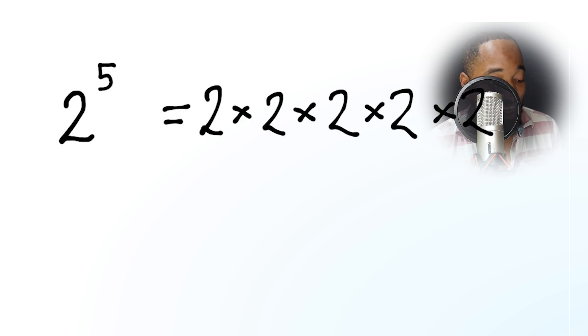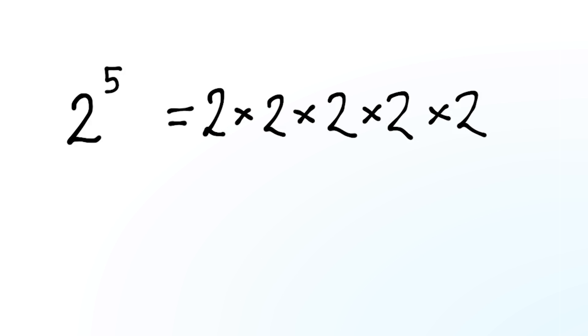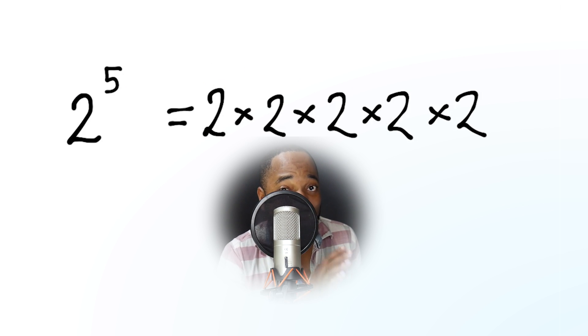You should recall that if you have a number like 2 to the power of 5 and you want to express that out, expand that, that means 2 multiplied by itself 5 times: one, two, three, four, five. So that's how it's expressed. This number here represents the index, and this is the number of times it's repeated. Everybody should know that if you're watching this video, you should at least know that.